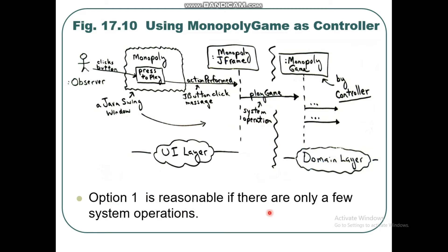Option 1 is reasonable if there are only a few system operations — when it represents the overall system or root object, or the device the system is running on. When there are many system operations, we say that option 2 is reasonable.